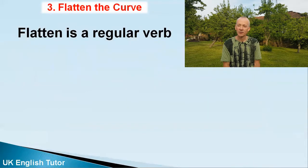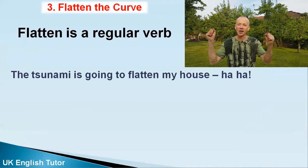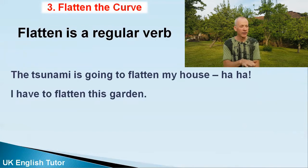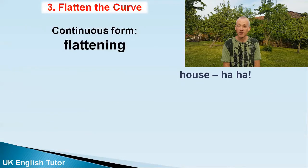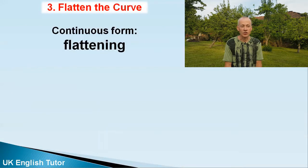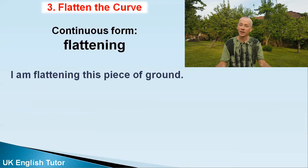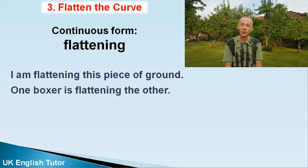Flatten is the infinitive form. You can say something like 'the tsunami is going to flatten my house,' or 'this garden is too bumpy, I need to flatten the bumps.' The continuous form is flattening, so you could say 'I'm flattening this piece of ground so that I can lie on it,' and when the two boxers are fighting, one boxer could say 'I am flattening you.'